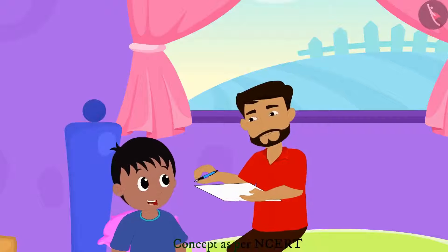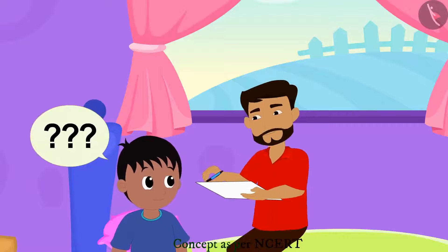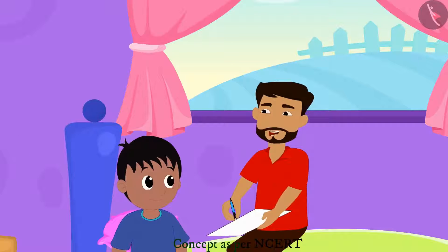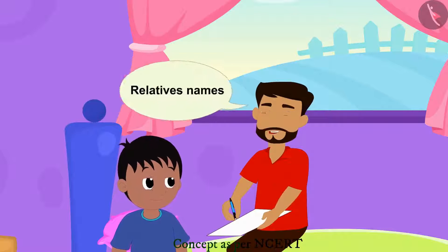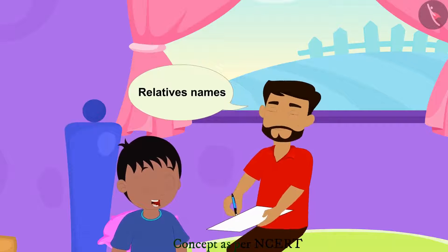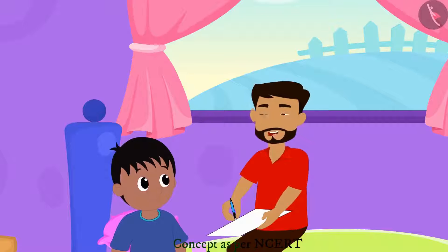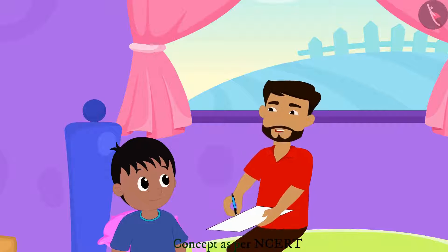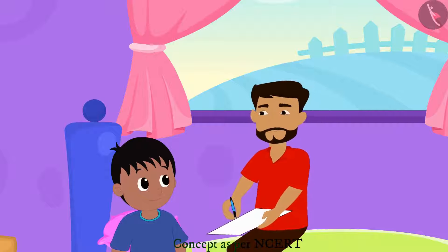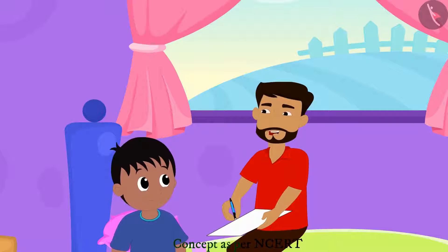Raju asks his father what he is doing. The father replies that he is making a list of the names of all his relatives — so many people. Raju wonders what to address them as. The father explains that they all have a different relationship with Raju, so he cannot address them all in the same way.